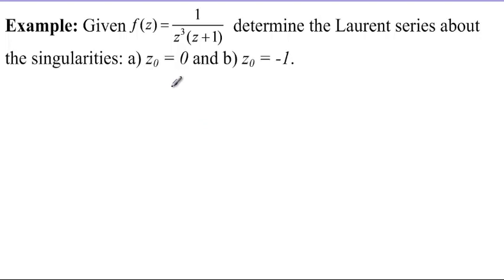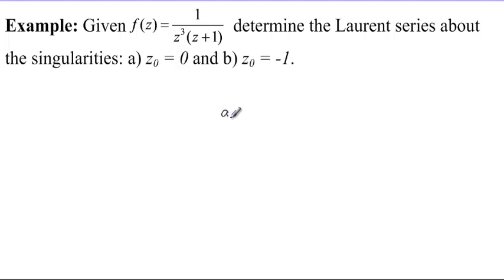Let's take the case where z₀ is equal to 0. We know that for such a point, if a function is developed around the origin, the normal series will be of this form: a₀ plus a₁ over z plus a₂ multiplied by z squared, and this continues to infinity.